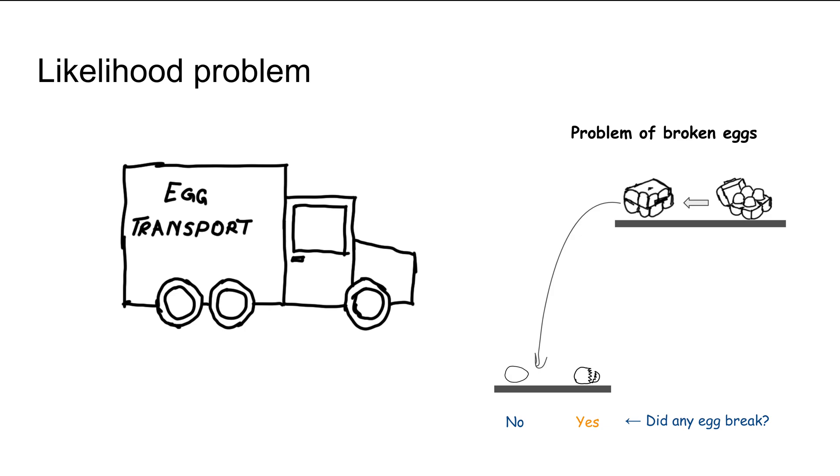As you can see in this right-hand side image, if a package reaches the customer intact, it's considered a success and there are no egg breaks. However, if the eggs break, either one or more than one, then we'll consider that packaging as a fail.